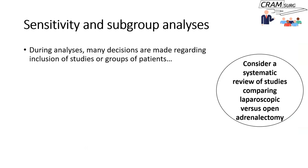Now let's move on to sensitivity and subgroup analysis. If you're reading a paper that incorporates a systematic review and meta-analysis, you will come across these terms. When doing the analysis, you have to make a lot of decisions about whether to include some studies or not — for example, in our review of studies comparing laparoscopic versus open adrenalectomy.